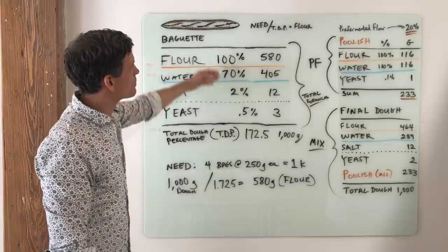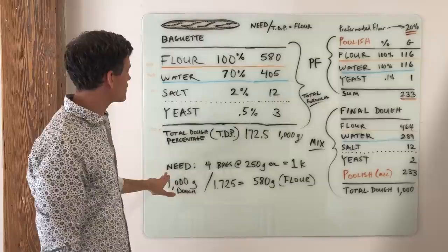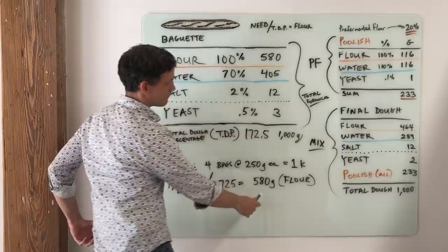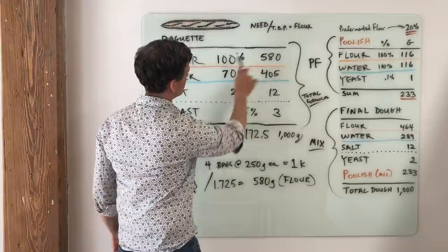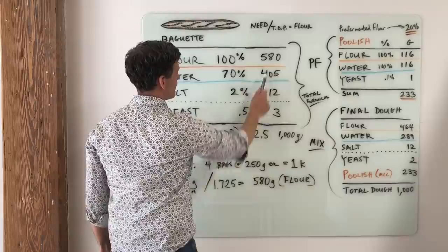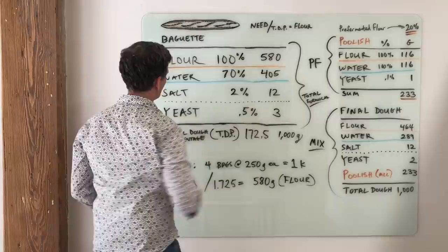So let's go back through that for one second. This is my total dough percentage. In baker's percentage terms, this is the relationship between ingredients. This is my total dough percentage. And I know that my batch size in this case is 1 kilo or 1,000 grams. If I divide that number by the total dough percentage, 1.725, I get 580 grams. 580 grams goes here. And then to figure out the rest of the formula, I just multiply 580 times 0.7 or 70% for 405, 580 times 2% for 12, 580 times 0.5 for 3. This is the total formula. This whole thing here is the total formula.